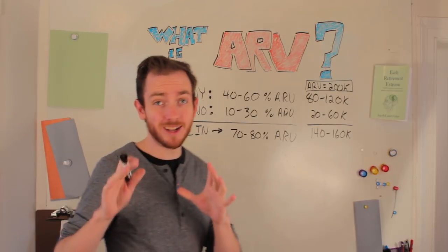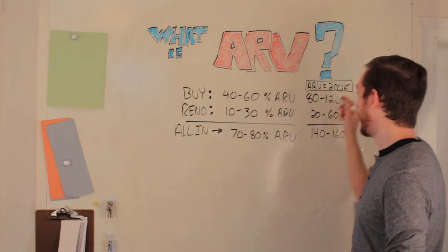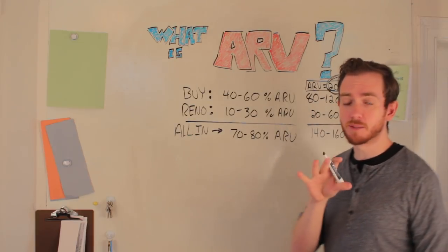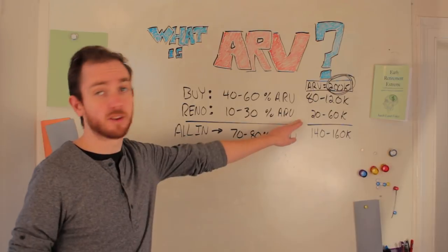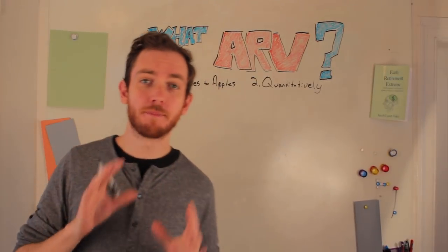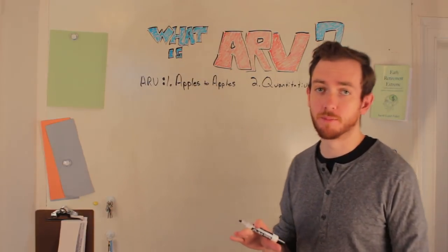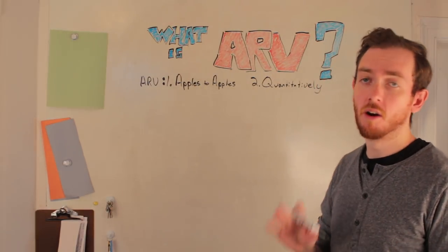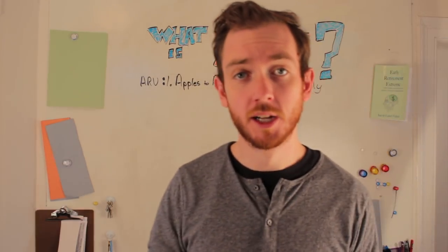This all sounds great in theory, but where a lot of real estate investors get caught up is: how do I actually figure out what this $200,000 is? How do I figure out that this property is going to be worth $200,000 after I spend $20,000 to $60,000 on renovations? In my mind, there are really two approaches to determining what the ARV of a property is going to be: an apples-to-apples comparison, or quantitatively determining the value of the property.